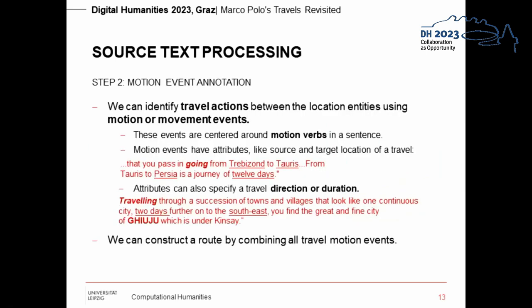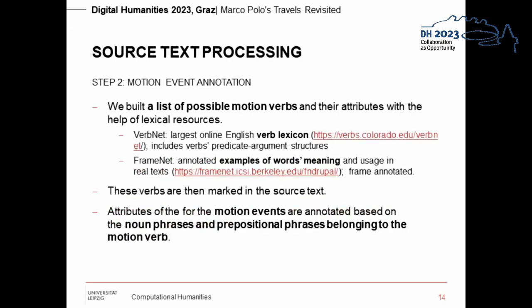The movement events are identified by so-called motion verbs. For this purpose, we use lexical resources to set up a dictionary of possible motion verbs. To create such a dictionary, we rely on resources like VerbNet, which categorizes verbs based on their meanings — such as verbs of motion, which includes verbs like 'run' — and FrameNet, which captures the argument structures of verbs.